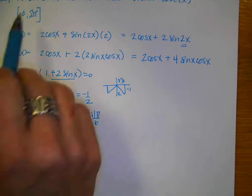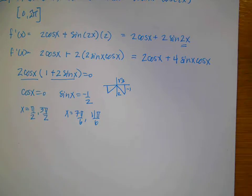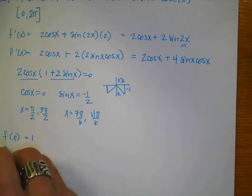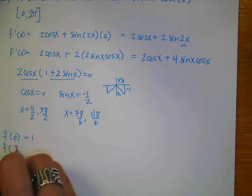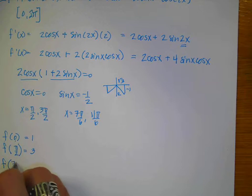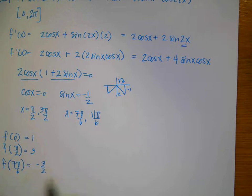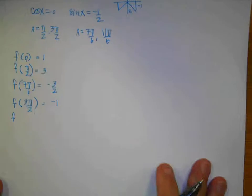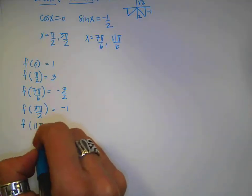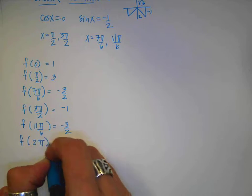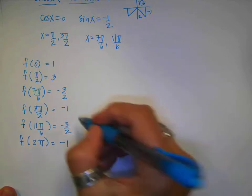Now I need to evaluate my function at all six points — the four critical values plus the two endpoints. f of 0 gives 1, f of π over 2 gives 3, f of 7π over 6 gives negative 3 halves, f of 3π over 2 gives negative 1, f of 11π over 6 gives negative 3 halves, and f of 2π gives negative 1.